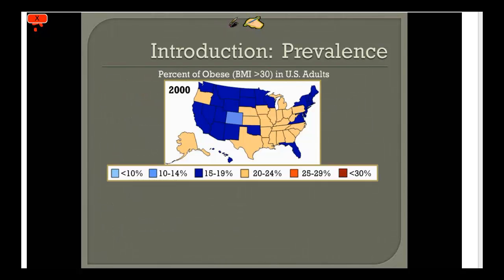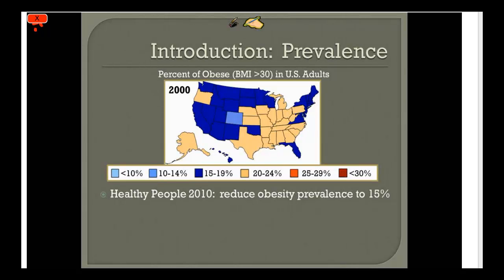The Center for Disease Control and Prevention tracks diseases relevant to public health. In the year 2000, color-coded data shows the prevalence of obesity by state — the majority of states were between 15% and 24%. This was already concerning, and a gradually increasing trend was noticed. In 2000, Healthy People — a program run by the Department of Health and Human Services — set a goal for the nation to reduce obesity down to 15%.